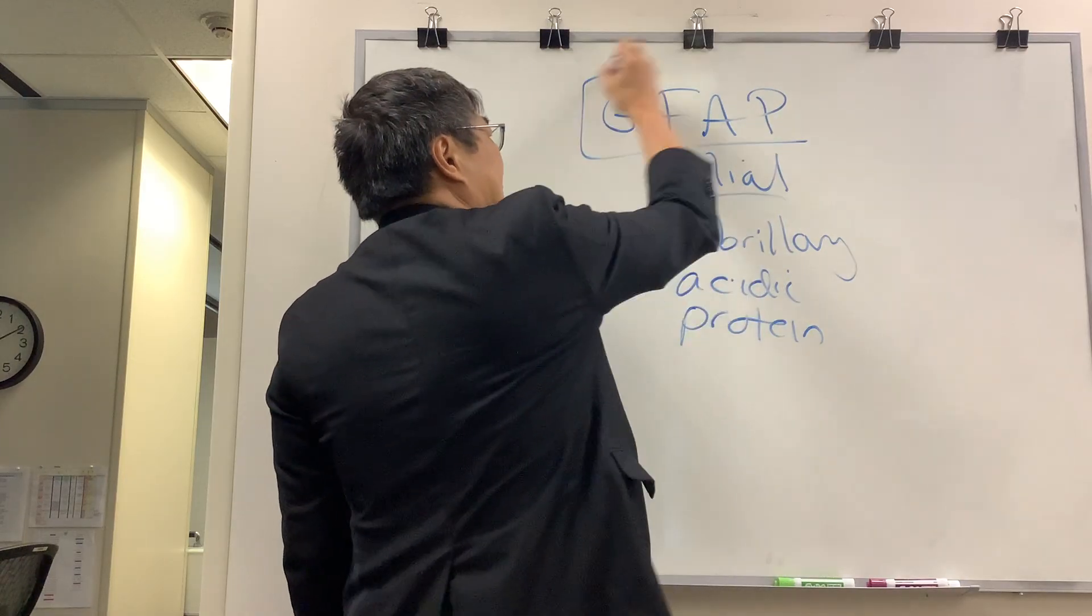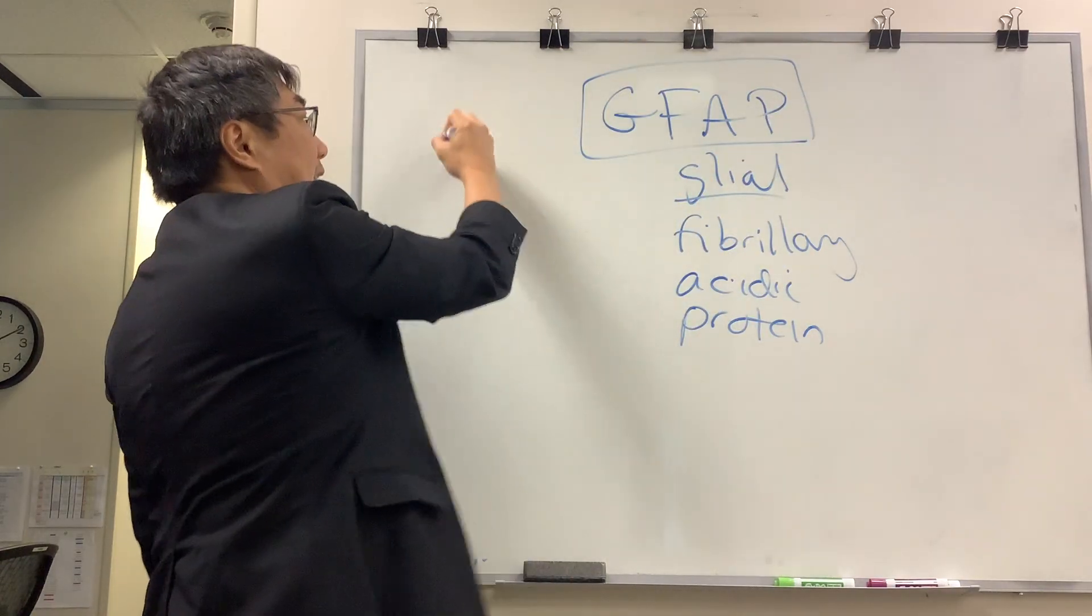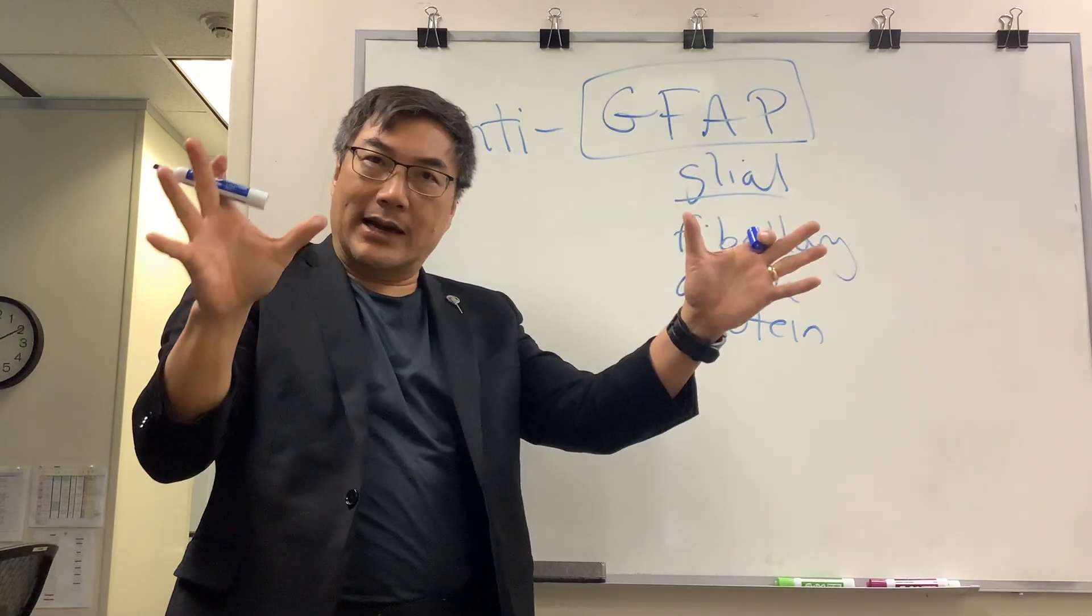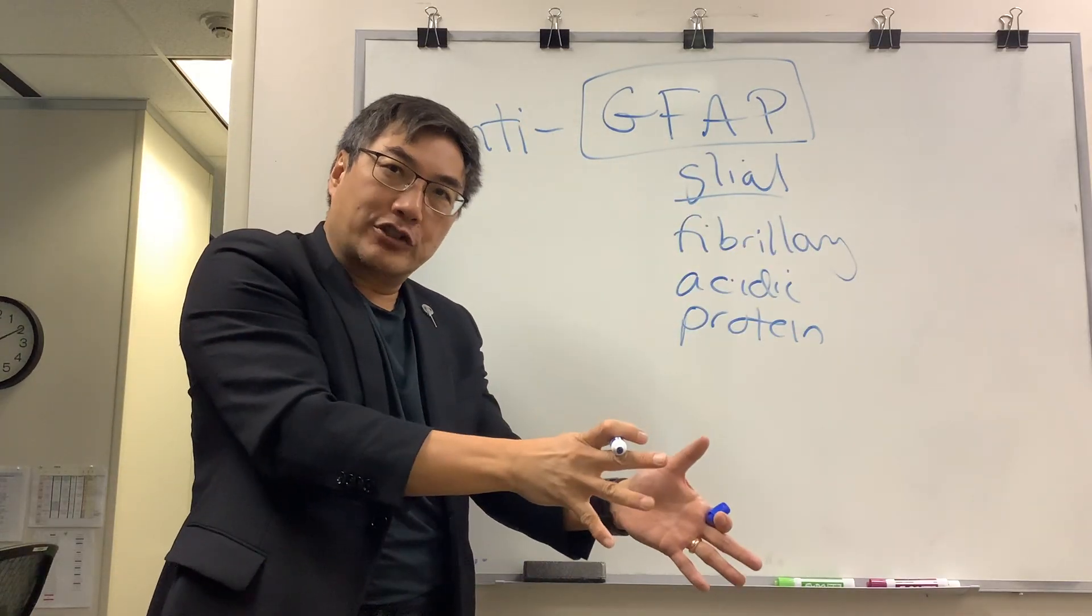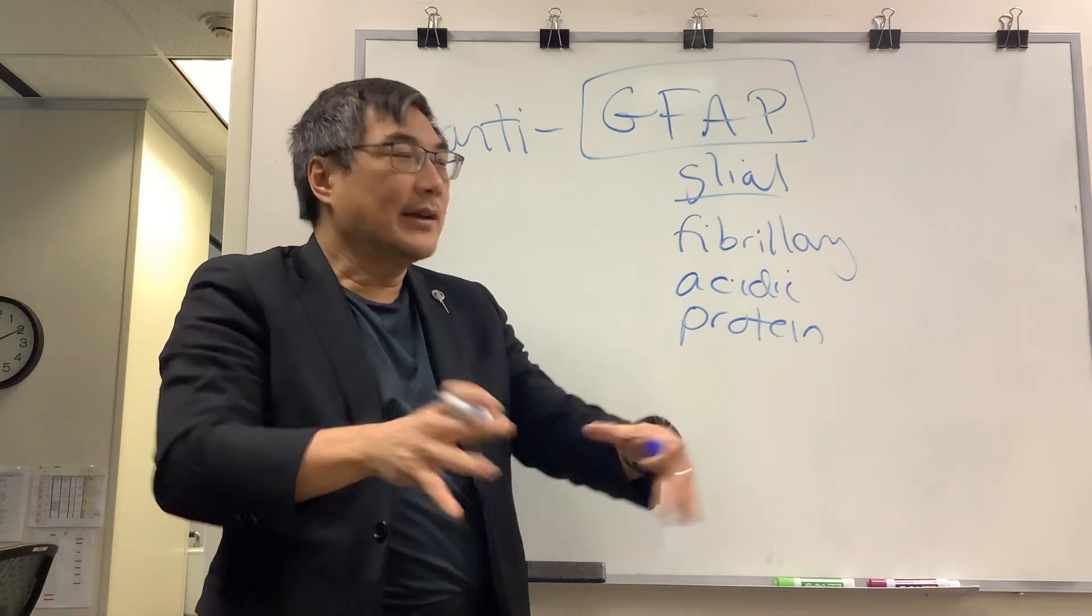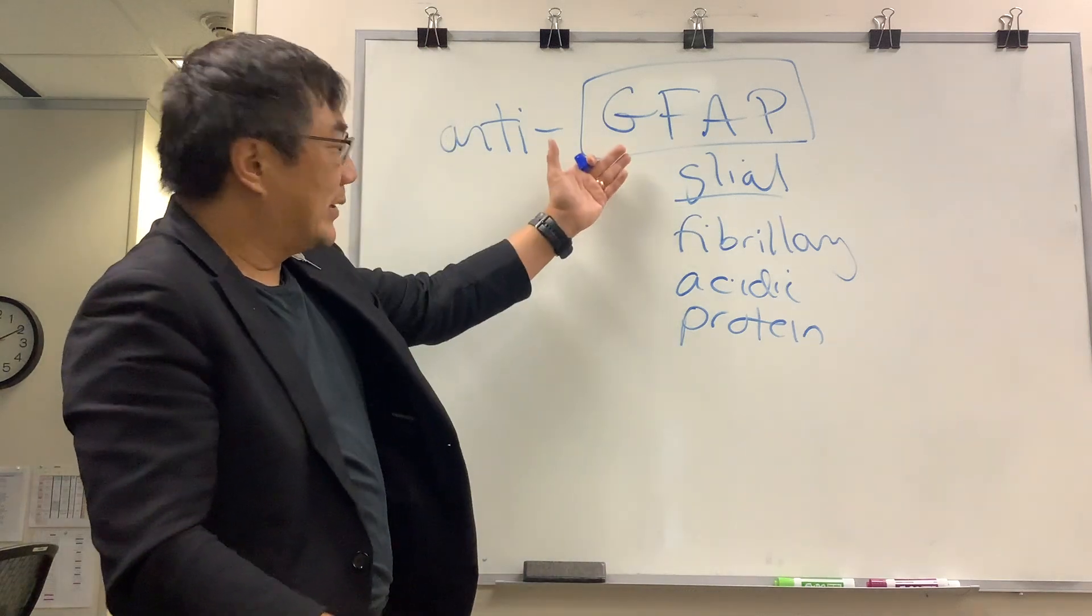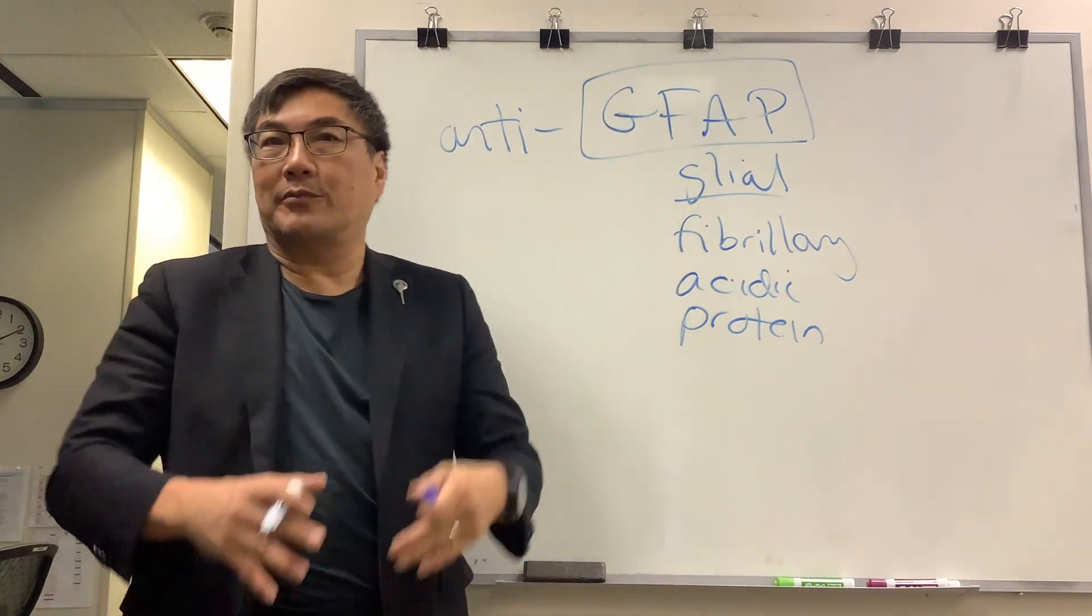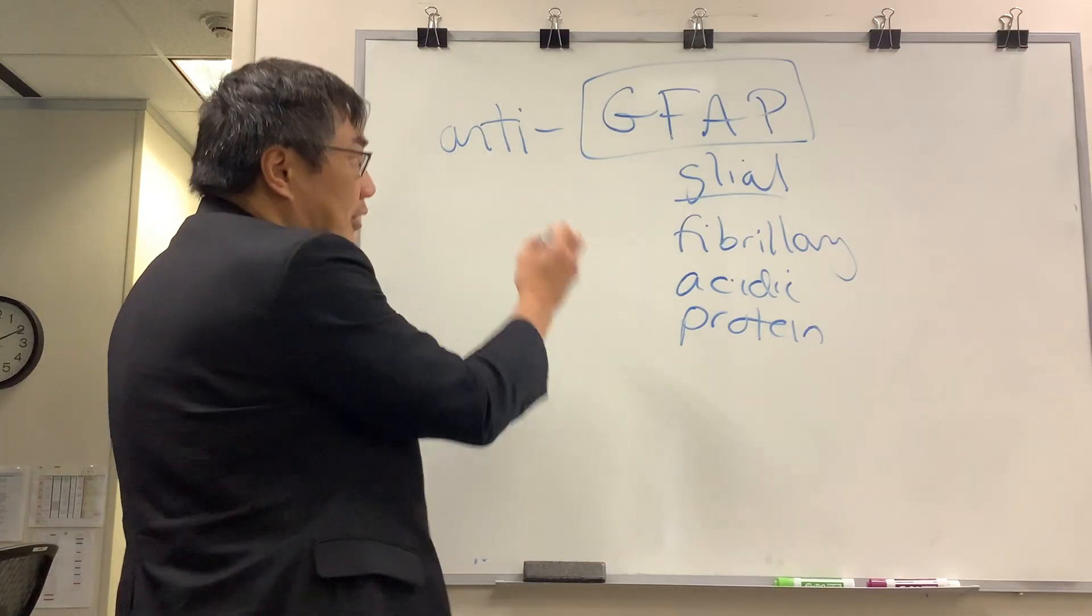GFAP is the target of antibodies, just like the whole host of antibodies: aquaporin-4 water channel for NMOSD, myelin oligodendrocytic glycoprotein for MOGAD (MOG-associated disease). We now have another one that you have to learn, which is glial fibrillary acidic protein, GFAP.